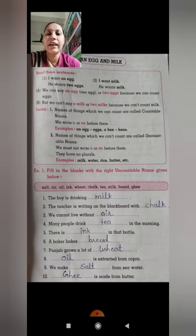So we can say an egg means one egg or two eggs because we can count eggs. An egg yarni ki woh only one egg ke baare mein hai and two eggs because woh count kar sakte hai. But we can't say a milk or two milks because we can't count milk. Milk joh hai woh ham count kar sakte nahi hai.